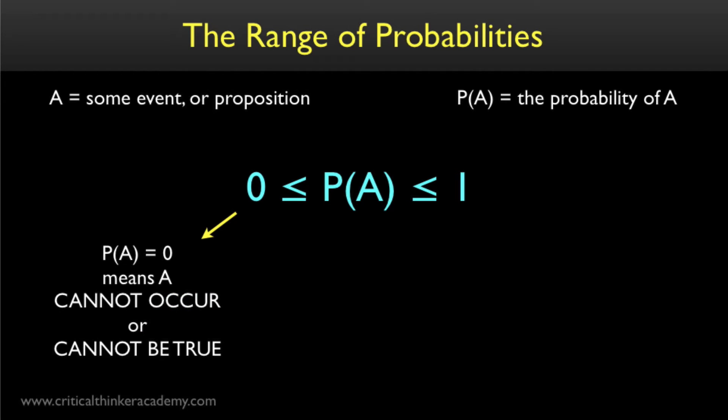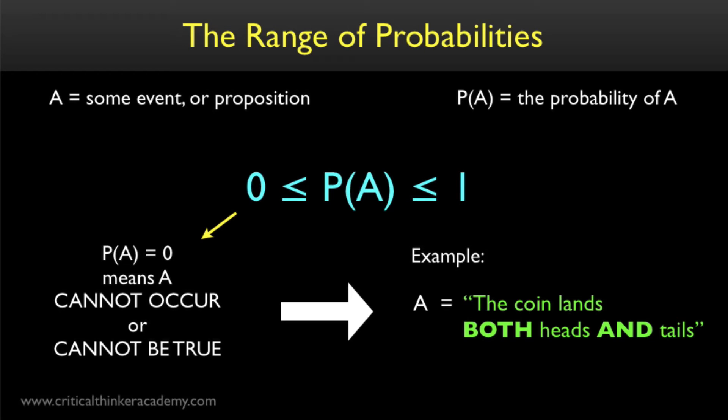Now, a probability equal to zero means just the opposite. This refers to an event that can't possibly occur, or a proposition that can't possibly be true. In mathematics and logic, there's a convention that contradictory statements can't be true. So, contradictions are automatically assigned a probability value of zero.